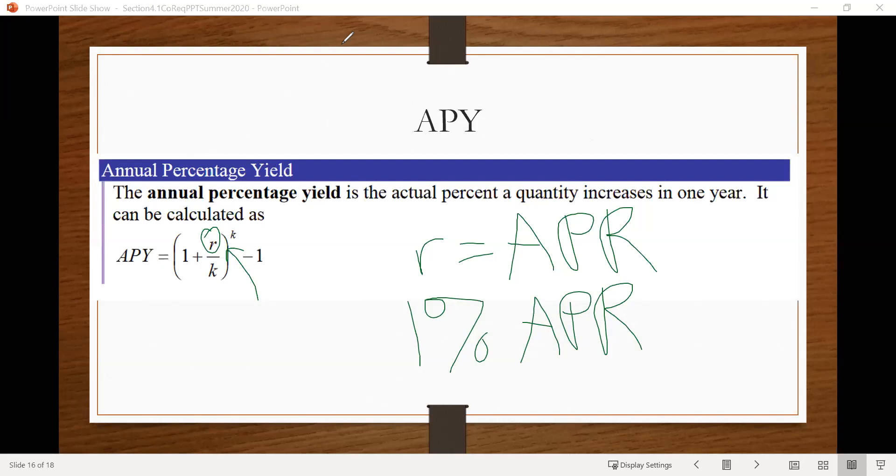And that percentage that you actually earn, we can find using this formula for APY. So it's given by APY is 1 plus R over K raised to the Kth power minus 1. Now notice this formula doesn't include a starting value, and it also doesn't include a period of time. It just gives us the amount, the percent we'll earn in one year. It gives it as a decimal. So let's look at an example of that.